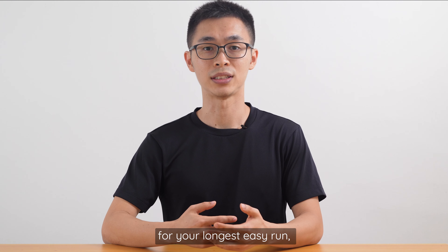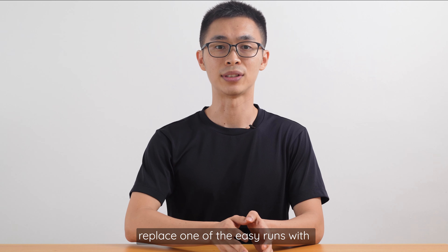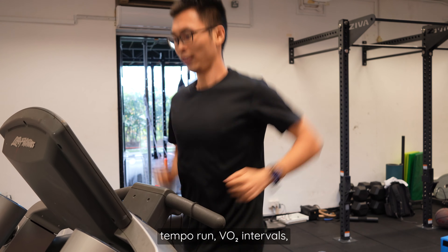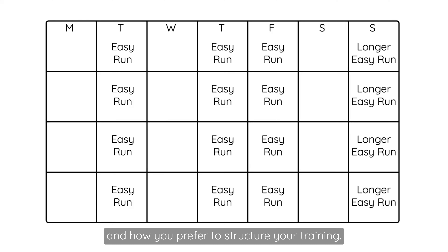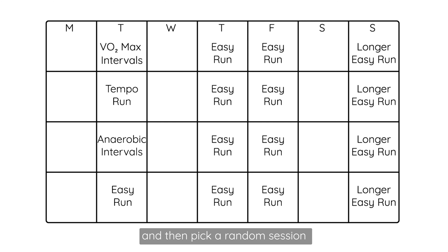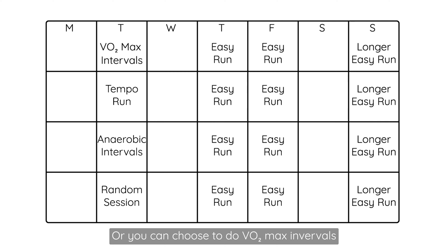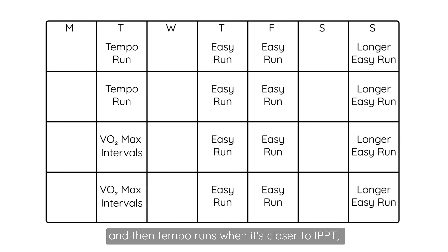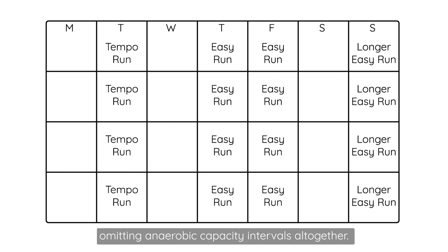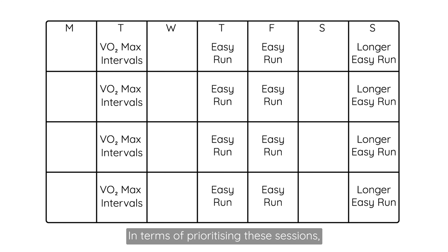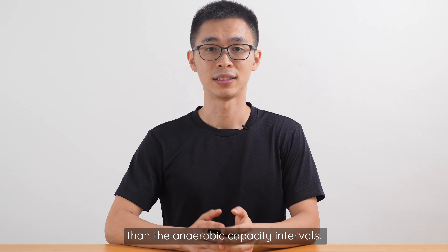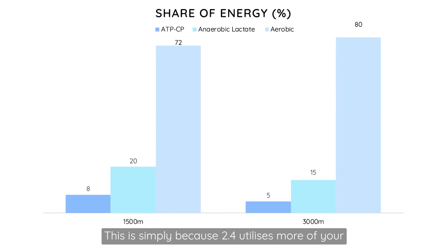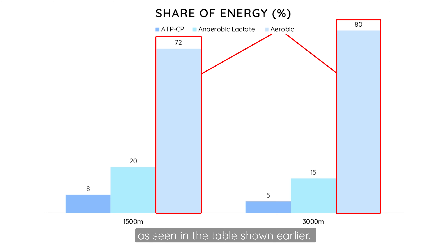Once you're able to hit around 1 hour for your longest easy run, replace one of those easy runs with one of the following session types: tempo run, VO2 max intervals, or anaerobic capacity intervals. It depends on which area you need to work on and how you prefer to structure your training. For most people, tempo runs and VO2 max intervals will translate into greater 2.4 timing improvements than anaerobic capacity intervals — simply because the 2.4 utilizes more of your aerobic system than anaerobic system, as seen in the earlier table.